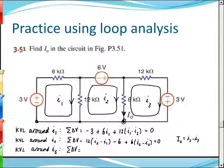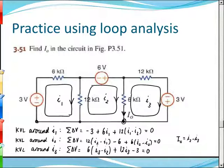As we walk around the third loop, going from here to here the voltage drop across the 6kΩ is 6 times the relevant net current; then 12kΩ gives the next term; then 13kΩ gives the final term. That gives us three equations. Solve for the unknowns, and you're done. Then combine your values to find I0.